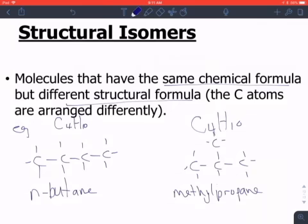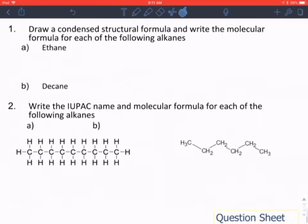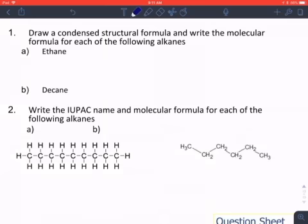And these are called structural isomers, they have the same chemical formula but different structures. Now that's the end of the note, I know I'm taking 3 videos to do this. Let's do a couple of examples here, and then you've got a question sheet on Google Classroom.